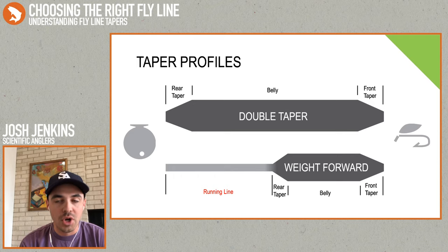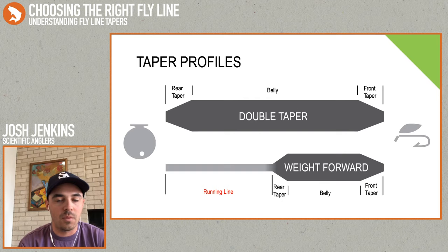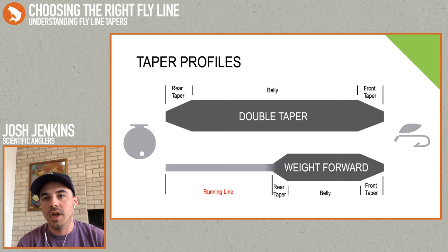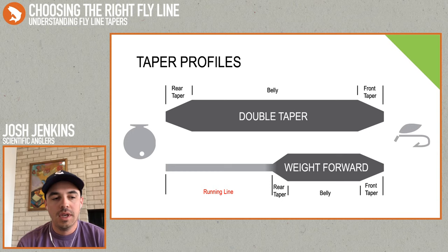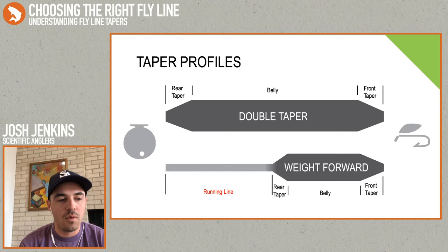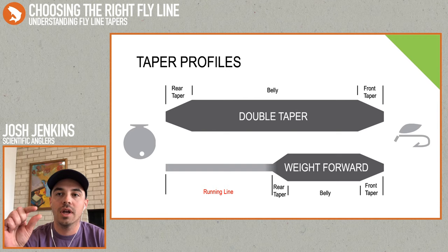On these diagrams, the left side is the reel end and the right side goes to your leader and your fly. The front taper is the portion closest to your leader. Behind that, we have the belly, which is where most of the weight of the line is held. The taper closest to the reel is the rear taper. On weight forward lines, instead of going directly to full diameter at the rear taper, you drop down to a pretty small diameter running line, which is mainly there to give you a little bit of extra distance.